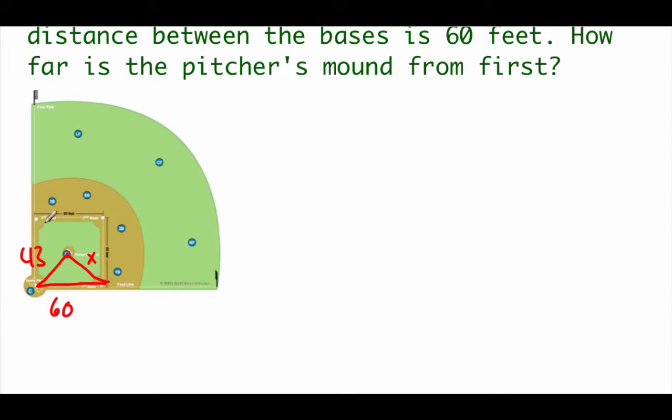Now notice that the infield makes a square, and this line running from the pitcher's mound to home plate cuts that 90 degree angle in half, so this is a 45 degree angle inside of there. So if we're looking for this x, we're going to use the law of cosines formula that says x squared equals 43 squared plus 60 squared minus 2 times 43 times 60 times the cosine of that 45 degree angle.